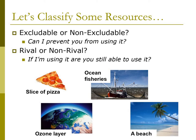Lastly, a beach. Private beaches are excludable by definition, while public beaches are non-excludable, and rivalness really depends on the number of people. If there are only a few people on the beach then it's non-rival. However, if the beach is packed, it becomes much more difficult to find a place to put your towel — this is what we call a congestible resource and it becomes rival in this case.